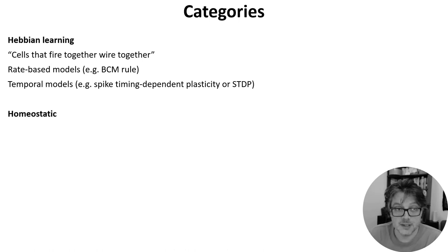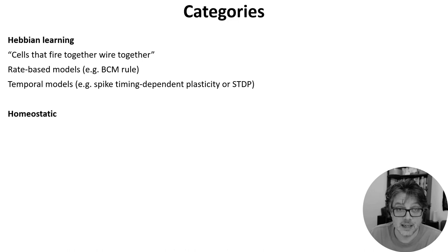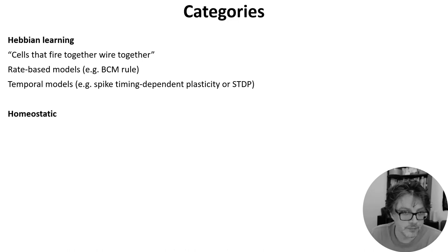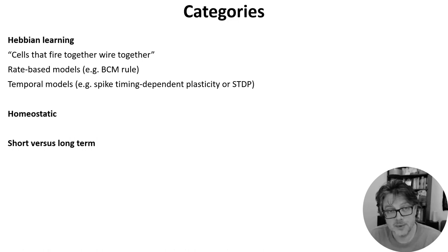If we're thinking about ways the brain changes, then thinking about homeostasis is important. This is the process by which our body or brain keeps itself in a sort of balance. If some neurons are firing too much, then synapses might get weaker or thresholds might go up to reduce activity. It's also important to distinguish between short- and long-term changes, like the difference between changes in activity and permanent changes to the structure of synapses and neurons.